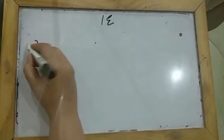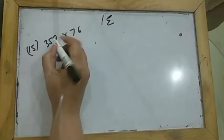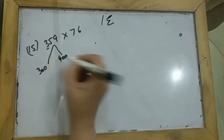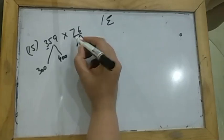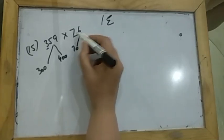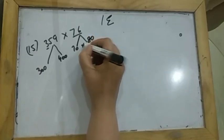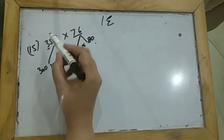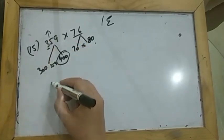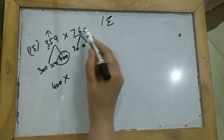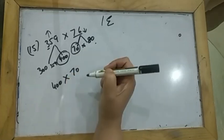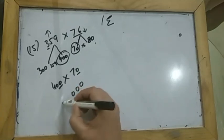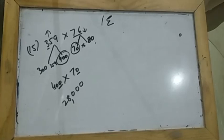Now the 15th question: 359 multiplied by 76. The number 359 lies between 300 and 400. The number 76 has only two digits, so it lies between 70 and 80. Rounding the first number upward gives 400, and rounding the second number downward gives 70. When you multiply, there are three zeros altogether and 7 fours are 28, so the answer is 28,000.